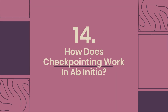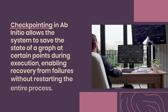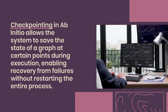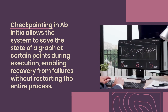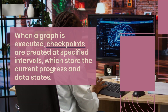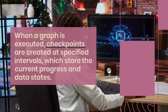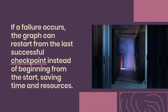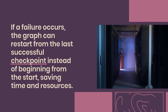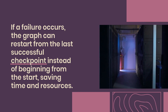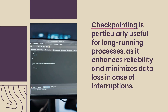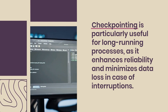Question 14: How does checkpointing work in AbInitio? Checkpointing in AbInitio allows the system to save the state of a graph at certain points during execution, enabling recovery from failures without restarting the entire process. When a graph is executed, checkpoints are created at specified intervals, storing the current progress and data states. If a failure occurs, the graph can restart from the last successful checkpoint instead of beginning from the start, saving time and resources. Checkpointing is particularly useful for long-running processes, as it enhances reliability and minimizes data loss in case of interruptions.